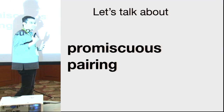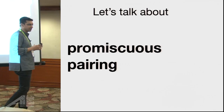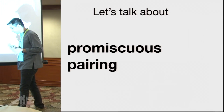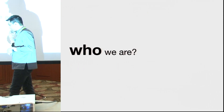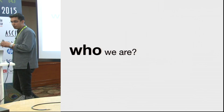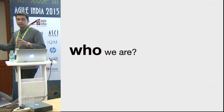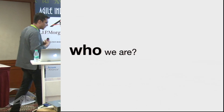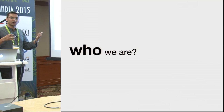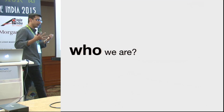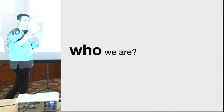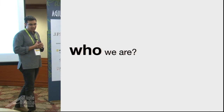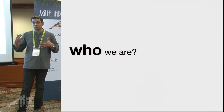As part of our experiments we keep doing various XP practices experiments - some work, some don't. We picked up promiscuous pairing as one of our experiments. Though we are a cross-functional feature team, we work in the banking domain, so the domain itself is pretty complex. It's a highly regulated environment - it's not like whatever you want to do you can do - and we are building features end to end throughout.